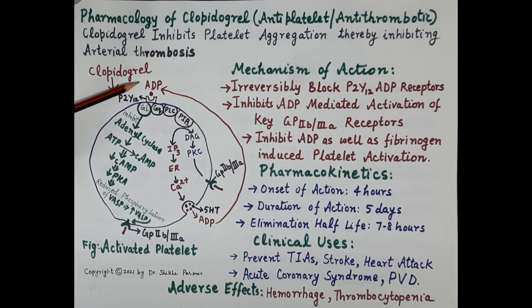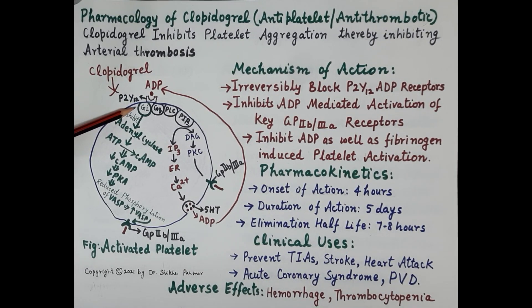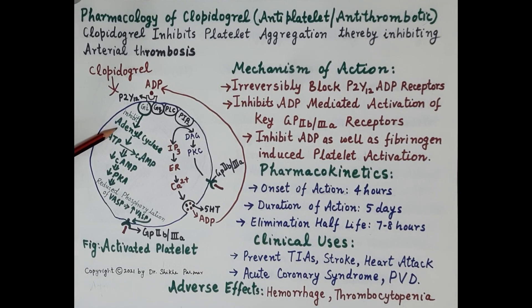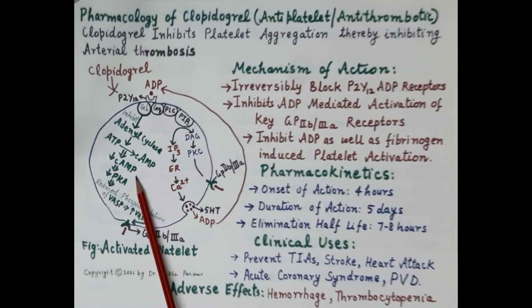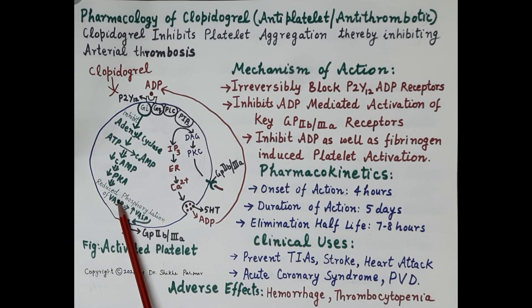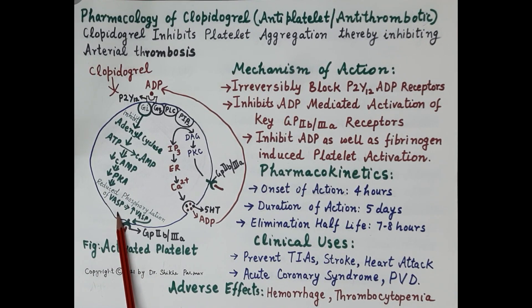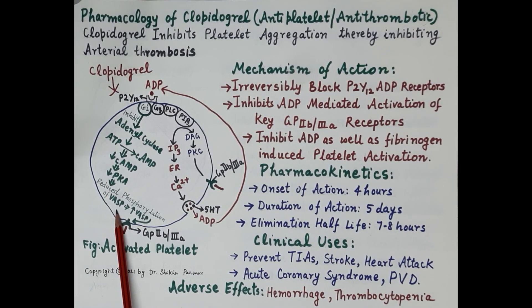Stimulation of G inhibitory proteins inhibits adenyl cyclase, which reduces synthesis of cyclic AMP in the platelets. Reduced cyclic AMP reduces activation of protein kinase A. Reduced protein kinase A causes reduced phosphorylation of VASP — vasodilator-stimulated phosphoprotein.